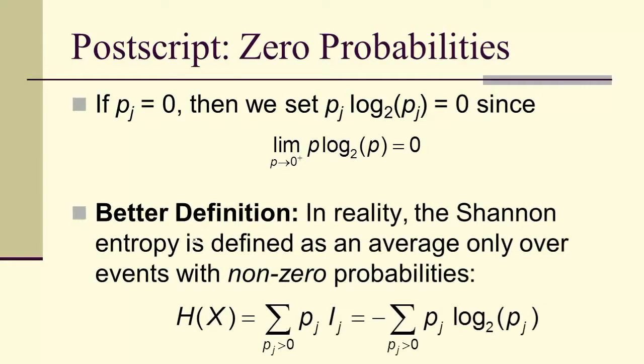Or we could simply define the Shannon entropy to be the average over events with non-zero probabilities. Either way you want to look at it, it's fine.